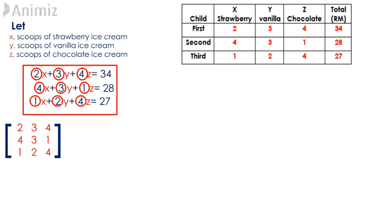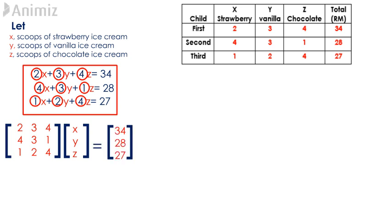Matrix X contains the elements X, Y and Z written as a 3 by 1 column matrix. Matrix B contains the elements 34, 28, 27 obtained from the right-hand side of the linear equations, also written as a 3 by 1 column matrix.